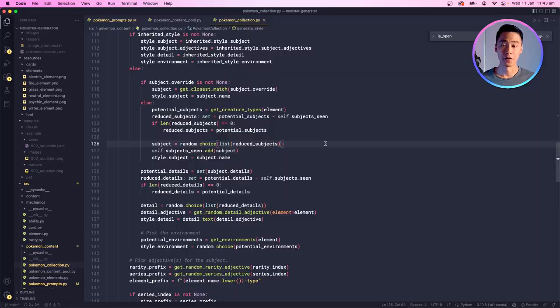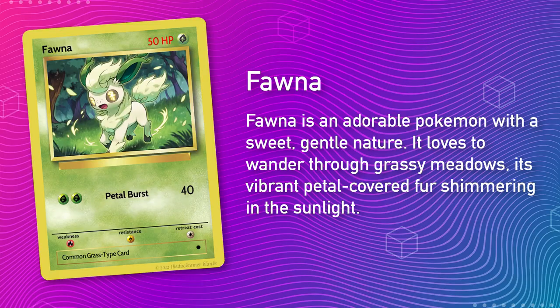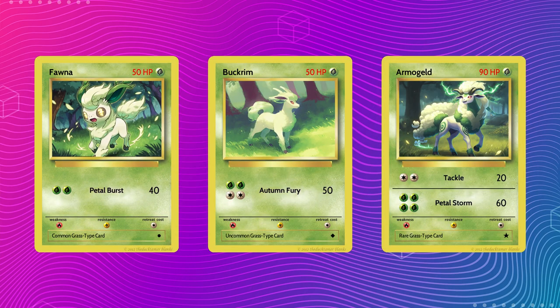Hey everyone, welcome to this video where we'll be taking a look at a project that can generate original and unique Pokemon cards using OpenAI, Midjourney, and Python. Here's an example of a generated card. This is Fauna, a grass-type starter Pokemon with the Petal Burst ability. It evolves into Buckrim and finally into Armourgeld.